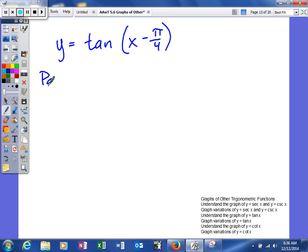So, again, one of the differences when we're finding the period, instead of being 2π over b, it's going to be just π over b. So in this case, our b is our x coefficient, which is 1, so π.